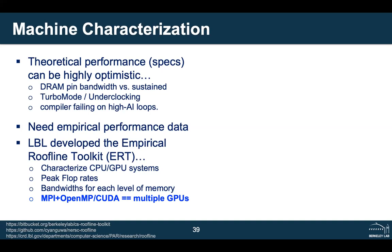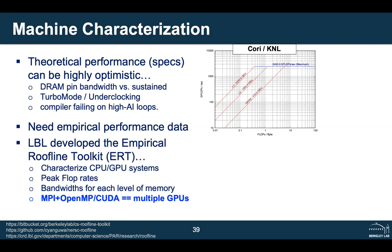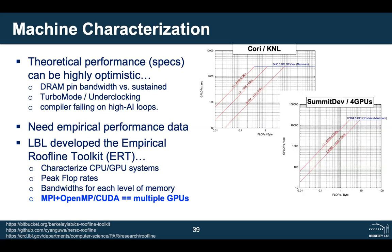Several years ago, Lawrence Berkeley Lab developed the Empirical Roofline Toolkit (ERT) to characterize CPU or GPU-accelerated machines. It gives peak flop rates and bandwidth at each level of the memory hierarchy, written with MPI plus OpenMP and CUDA to run on multiple GPUs in a multi-GPU accelerated node. We could run it on the Cori KNL machine to get a DRAM roofline, L2 roofline, or L1 roofline, and similarly on Summit Dev where ERT summed performance across four GPUs to construct the model.